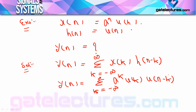अब हमें इसे solve करना है। Y(n) के equation में U के दो terms हैं — एक term U(k) और एक term U(n-k)। इन U terms को solve करके summation की limit find out कर लें तो answer निकाल पाएंगे। इन U का काम सिर्फ summation या integration की limit decide करना होता है।